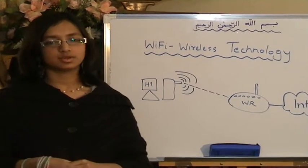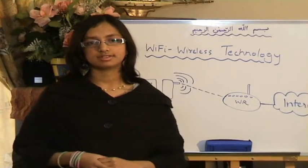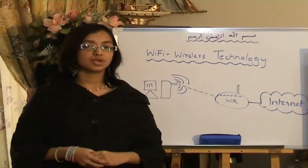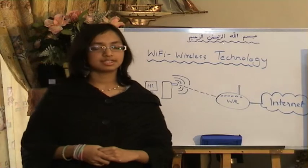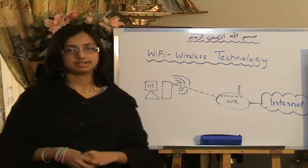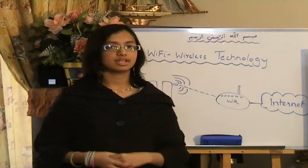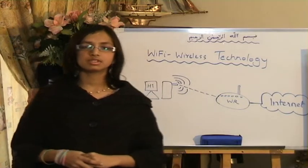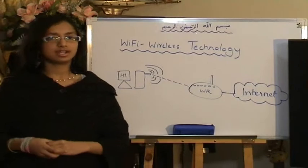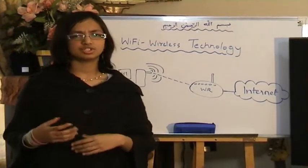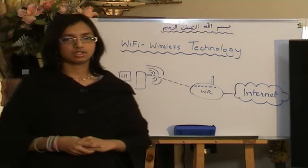Just like many things in this world, Wi-Fi has its own advantages and disadvantages. One of its advantages is that it's very simple to set up, and one of its disadvantages is that it can only be used for small areas — it cannot be used for areas that extend more than 100 meters. That's where we use other wireless technologies such as WiMAX, 3G, etc.